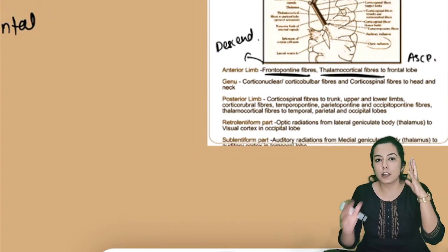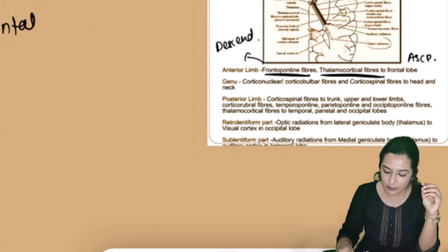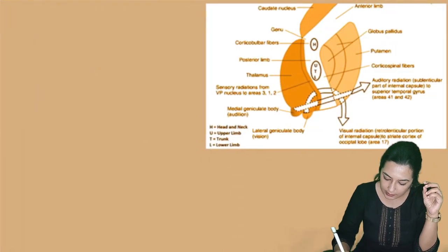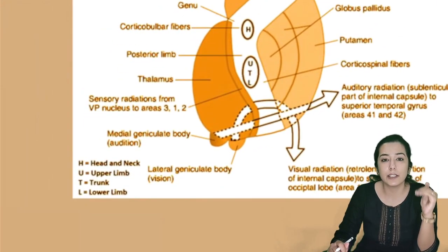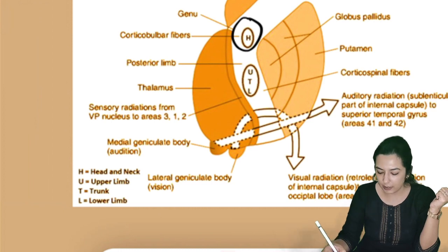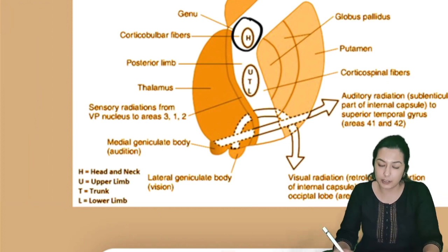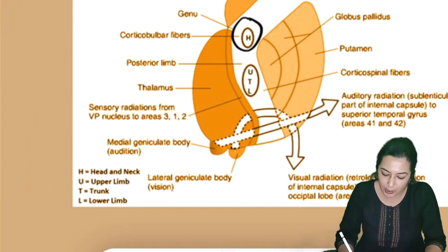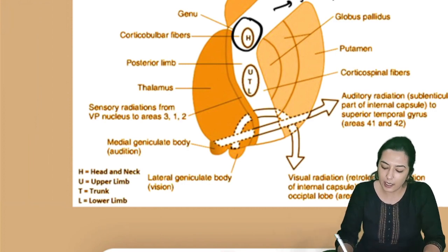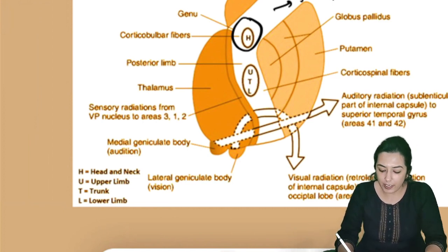The arrangement of fibers is very specific in the internal capsule. The fibers for the head and neck are in the genu, while upper limb, trunk, and lower limb fibers are in the posterior limb. Anteriorly, all the frontal lobe fibers are present — frontopontine descending and thalamocortical ascending going into the frontal lobe.